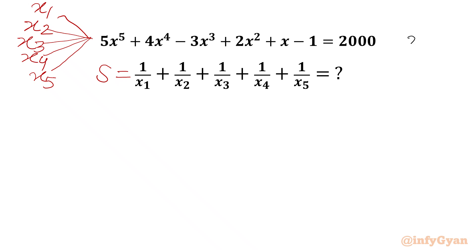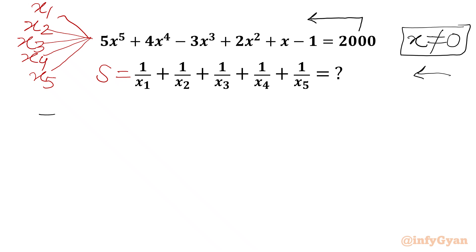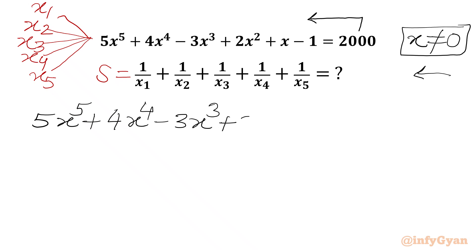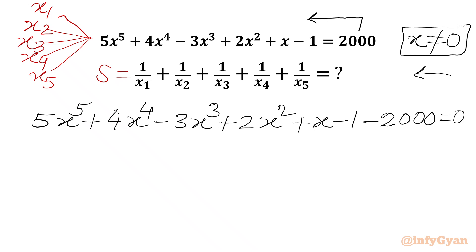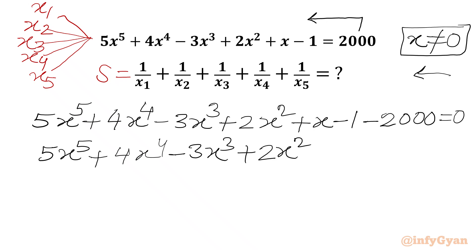Now, for our quintic equation, x cannot be equal to 0, as it is not satisfying our equation, and we have x in the denominator in our required expression. Taking all the terms to one side, we get 5x to the power 5 plus 4x to the power 4 minus 3x cubed plus 2x squared plus x minus 1 minus 2000, which gives us minus 2001 as the constant term.